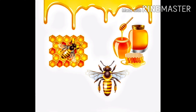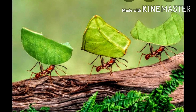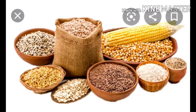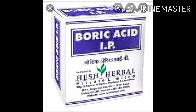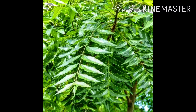We learnt about how various animals and plants store their food so they can use it later. We also learnt about the storage of food grains in a warehouse. However, sometimes food grains get spoiled. Some ways to prevent damage to the grains are: boric acid powder is put on the grains, and neem leaves are spread in the rice to avoid bugs.